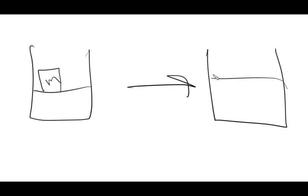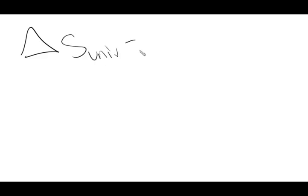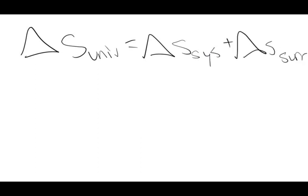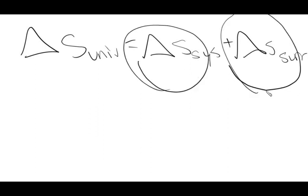In this part we finish problem 5.34 by solving for the entropy change of the universe. As a reminder, a piston-cylinder assembly has a mass removed and the gas undergoes isothermal expansion to equilibrium with the surroundings. We start with the entropy balance: ΔS_universe = ΔS_system + ΔS_surroundings.